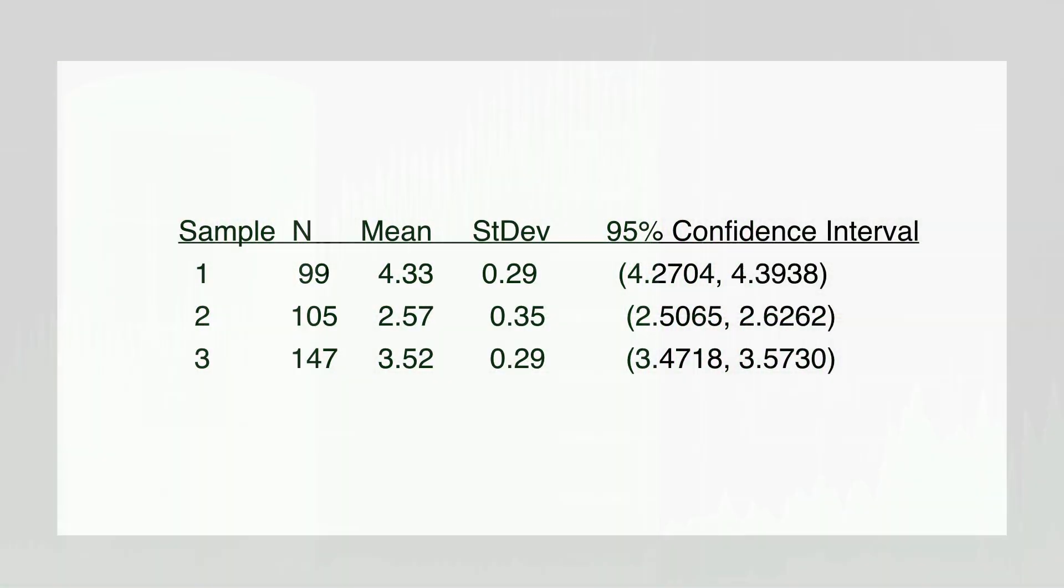The third way that I've chosen to represent that same data is in a table format. We've got a row for each sample—samples one, two, and three. N is the number of data points in each of those sets, and then you see a column for the mean, that's the average. You see a column for the standard deviation as well. The standard deviation is pretty similar for all of these data sets, but you can see that the means are different.